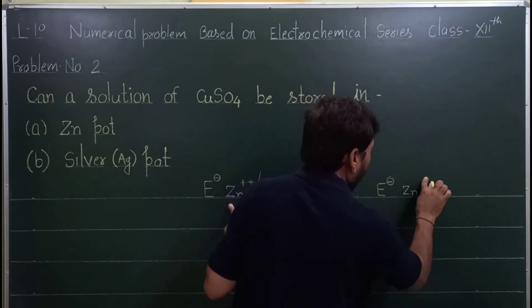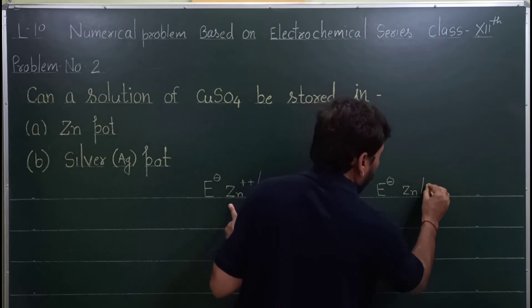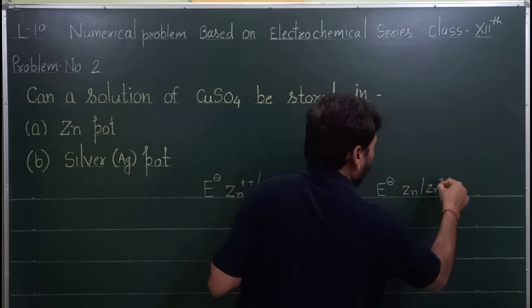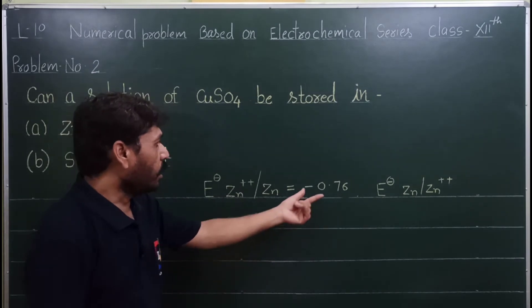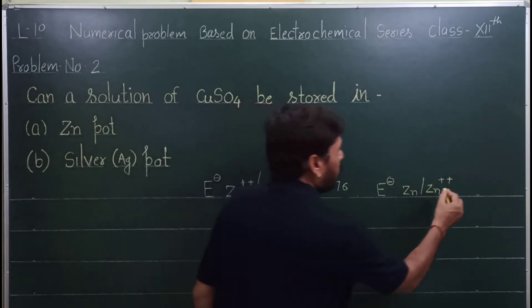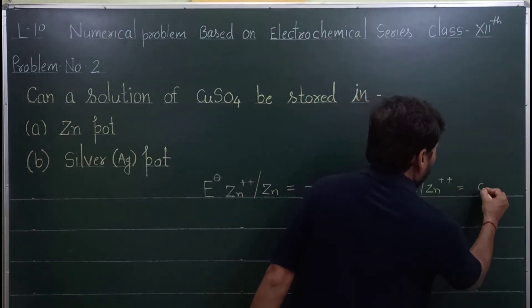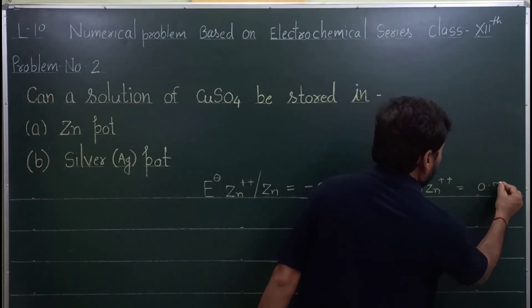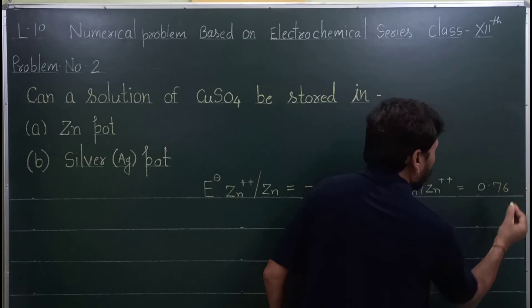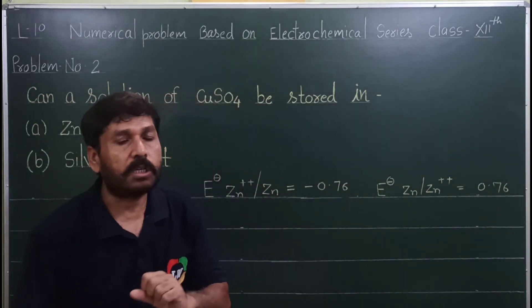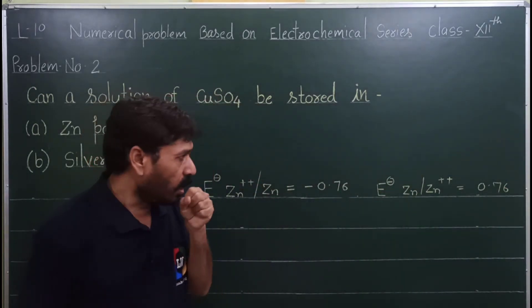If we convert this to oxidation potential — Zn / Zn2+ — then the sign changes: plus becomes minus, so the standard oxidation potential of zinc becomes +0.76 volts.